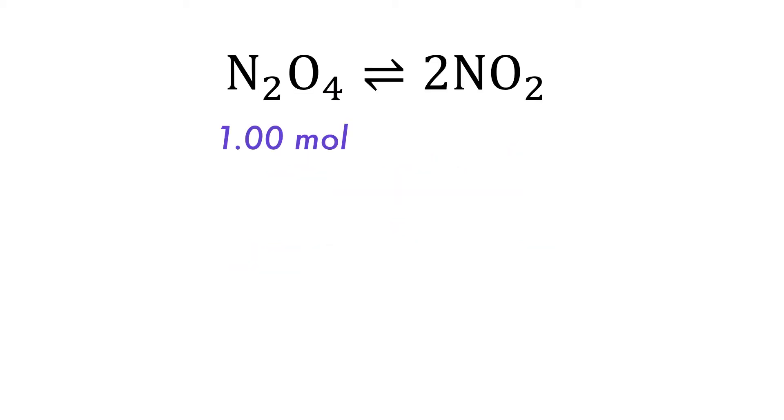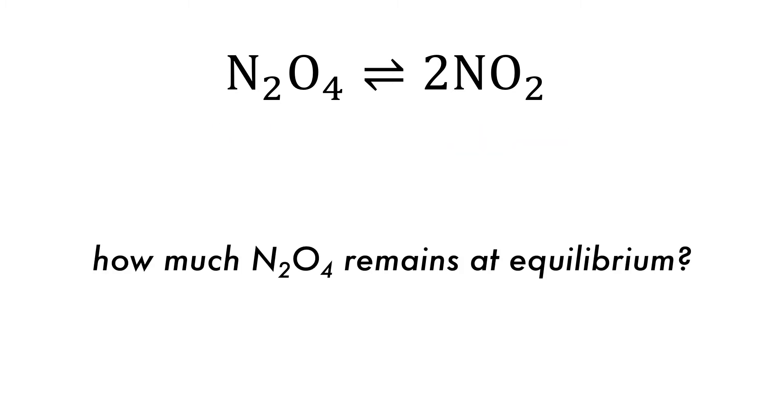For example, initially there is one mole of nitrogen tetraoxide in the closed system, and then when the system reaches equilibrium there were 1.8 moles of nitrogen dioxide in the system. How much of the nitrogen tetraoxide remains at equilibrium?